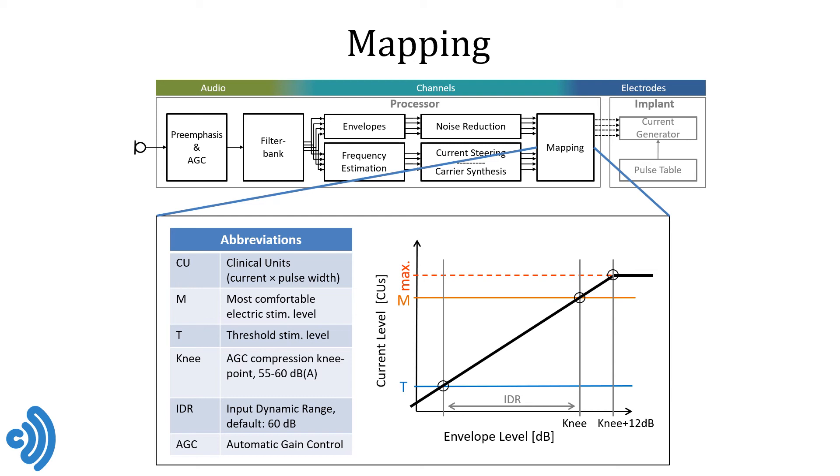As an outlook, in our vocoder CI simulation we have a simple patient profile prepared for you. The T-levels of all electrodes are 50 microamperes and the M-levels are 500 microamperes. You need to make sure that your stimulation pulse amplitudes comply with these patient parameters if you want to avoid inaudible or completely saturated vocoder outputs.